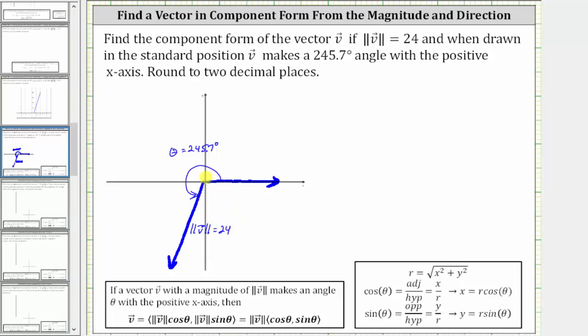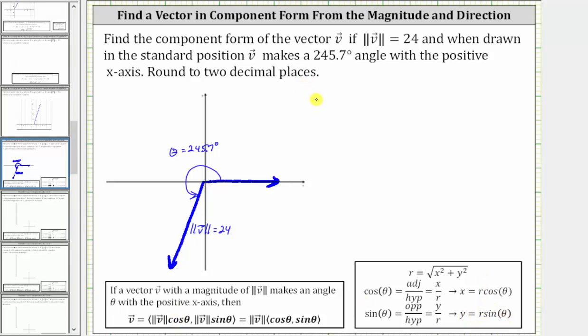Notice when we find the component form of the vector, both the x-component and y-component are going to be negative because the vector lies in the third quadrant. If a vector v makes an angle theta with the positive x-axis, then the x-component equals the magnitude of v times cosine theta, and the y-component equals the magnitude of v times sine theta. This is the same as stating x equals r cosine theta and y equals r sine theta, where r is the magnitude of the vector.